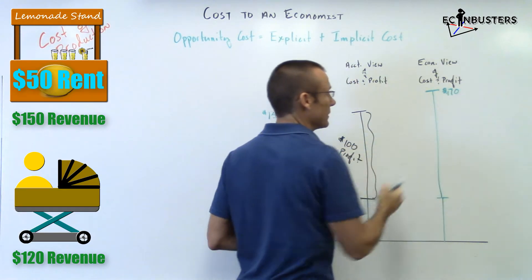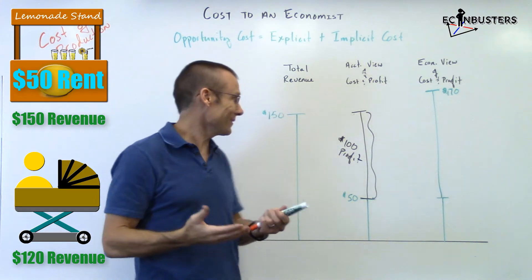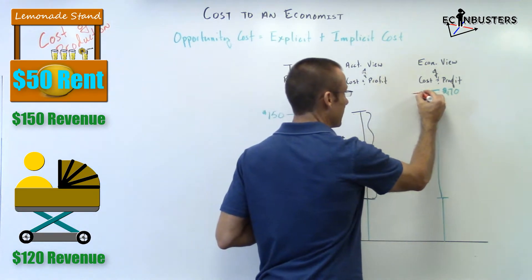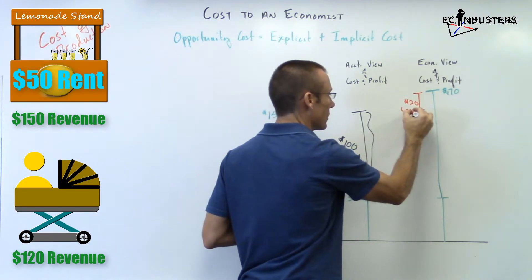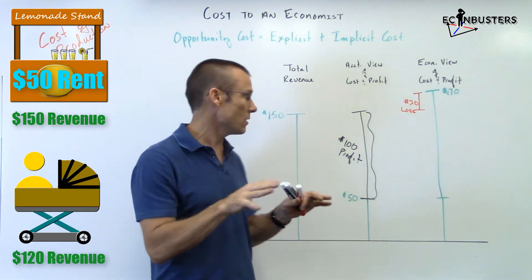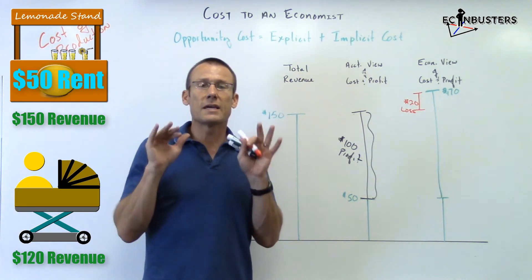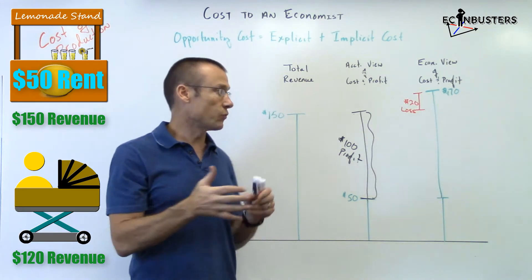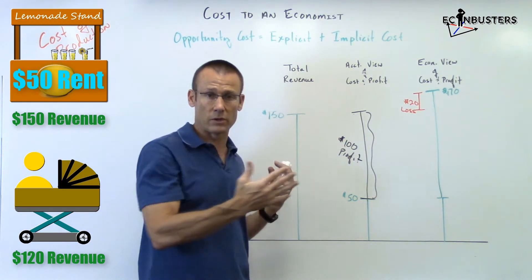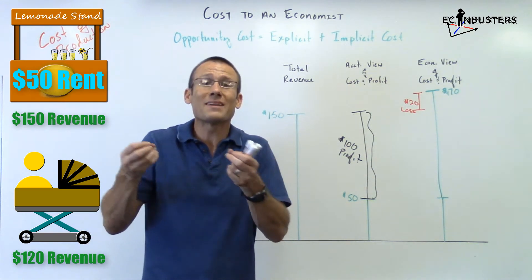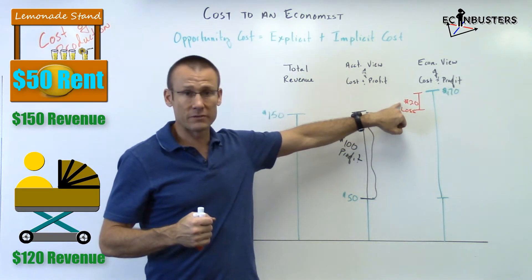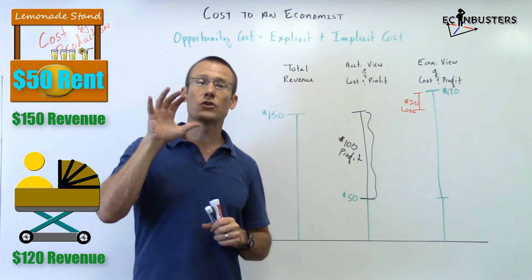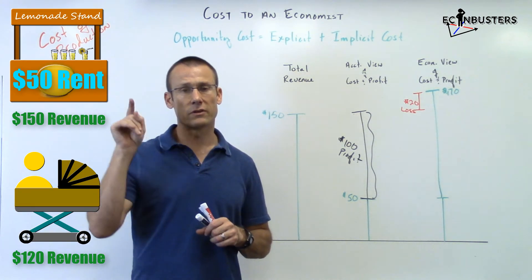That brings total cost up to $170. Is it profitable? No. Total revenues of $150 versus total costs of $170 — she's going to be in the red. By how much? $20. That's $20 of economic loss. So the economist would say: no, it's not profitable to open up the lemonade stand. She's going to get a loss — don't do it — because the economist is all about should you or should you not do something.